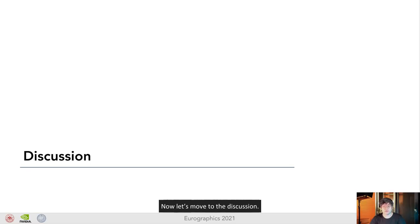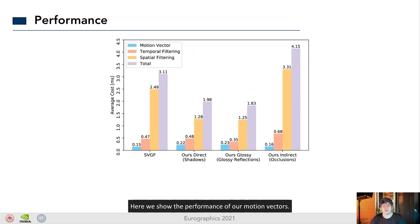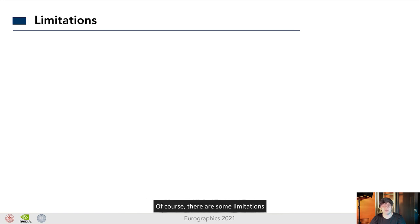Now, let's move to the discussion. Here we show the performance of our motion vectors. We compare with SVGF using traditional motion vectors. Different from previous work, our main contribution is not a spatial filter or denoising system, but a different type of motion vectors. As one would expect from their simple computation, in practice, we observe only a negligible performance cost by replacing the traditional motion vector with ours.